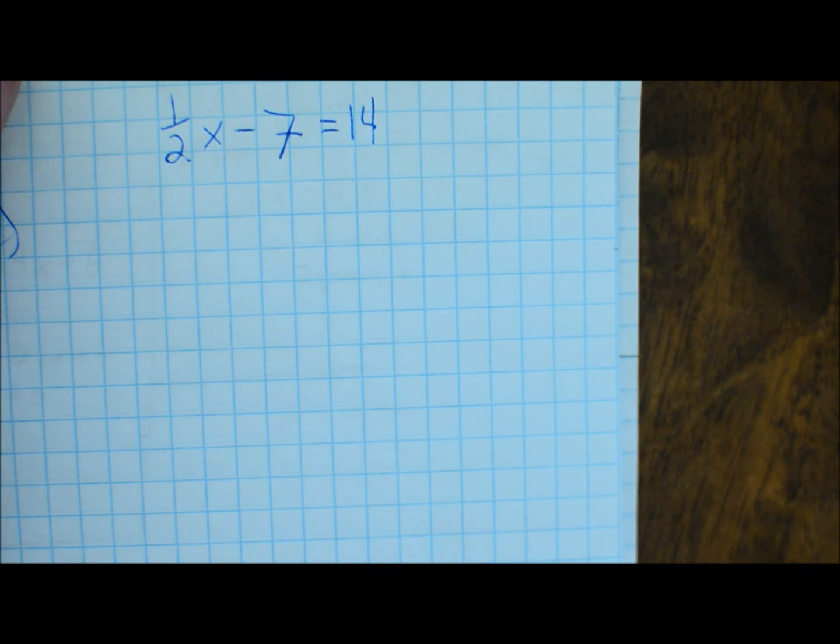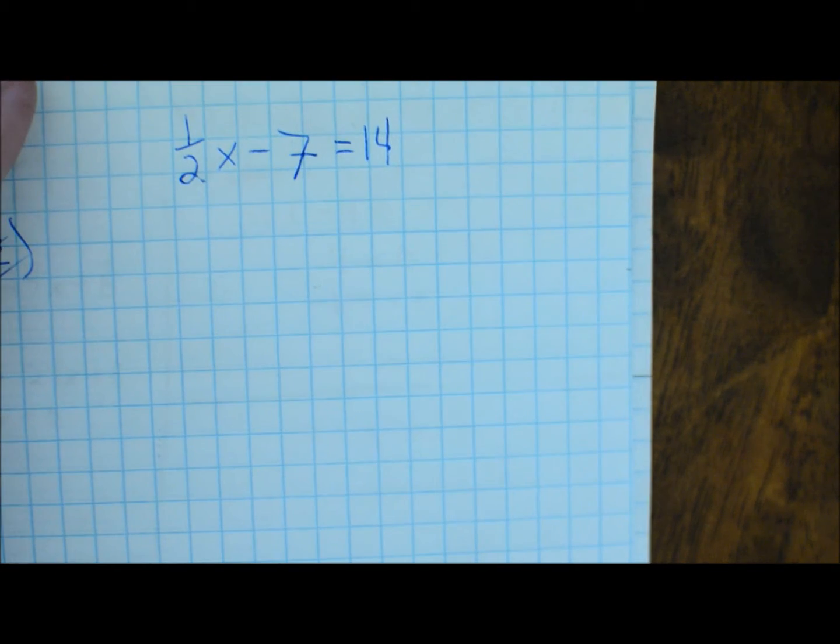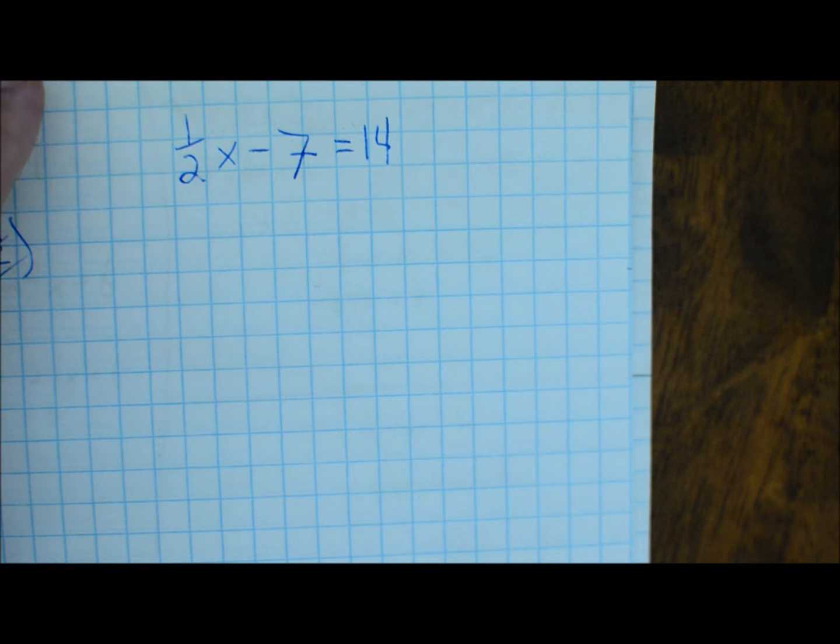All right, so the question asks if the quantity represents a real number, find any restrictions on x. So what does that mean? That means, is there any situation that x can't be, as in, turns the denominator into a zero?